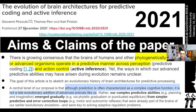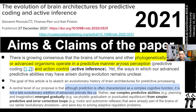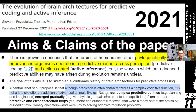The paper was published in December 2021 in Royal Society Publishing. The authors state there is growing consensus that brains of humans and other phylogenetically derived organisms operate in a predictive manner across perception — predictive coding — and action control — active inference. Yet the ways in which our advanced predictive abilities may have arisen during evolution remain unclear. The goal is to sketch an evolutionary history of brain architectures for predictive processing.